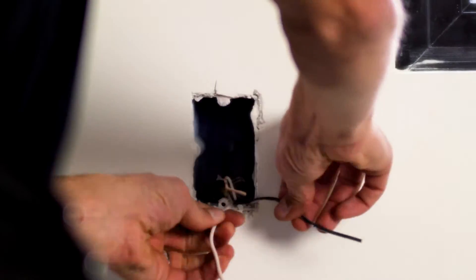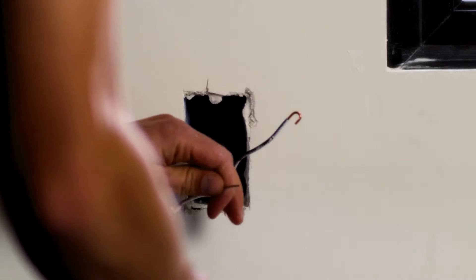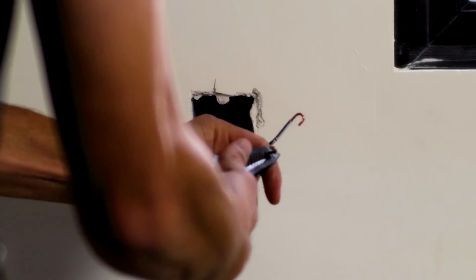I'm pulling out my number 12 Romex cable with three conductors: hot, neutral, and ground. I'm stripping to about seven-eighths of an inch. I'm putting that twist on the end for wrapping around the screws.